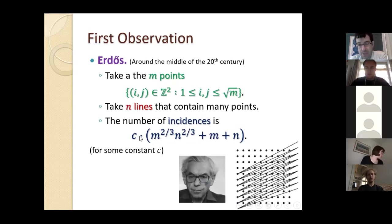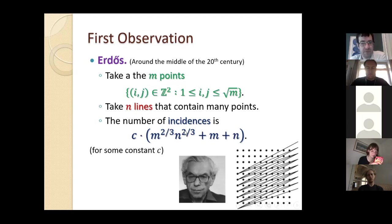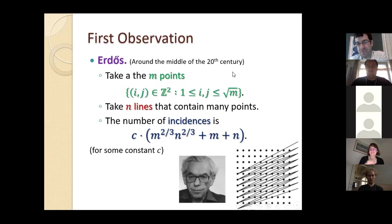The important part is: the number of incidences is m^(2/3) · n^(2/3), where the lower-order terms m and n only dominate in extreme cases where the number of points greatly exceeds the square of the number of lines or vice versa.